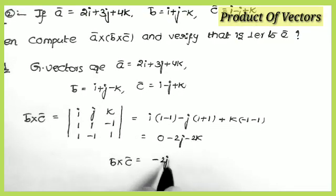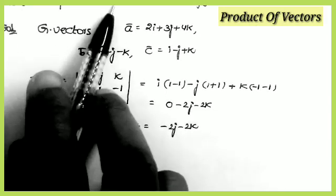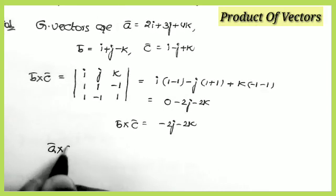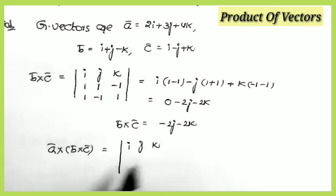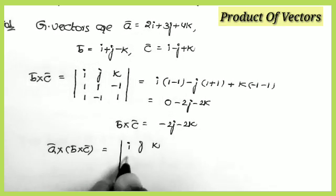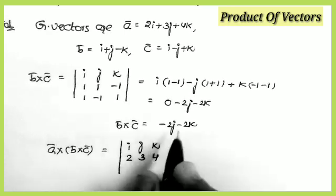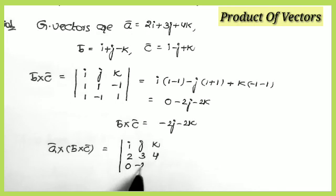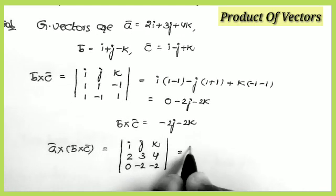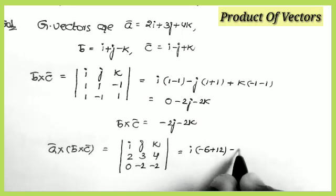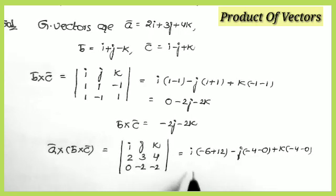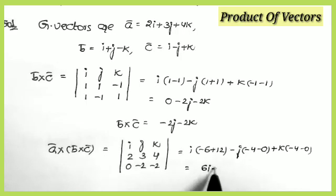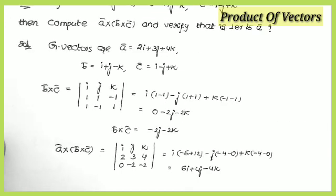Now we find a×(b×c). Taking i, j, k with a = (2, 3, 4) and b×c = (0, −2, −2). i(3×−2 − 4×−2) = −6 + 8 = 2... computing further: i = 6, j = 4, k = −4. So a×(b×c) = 6i + 4j − 4k.